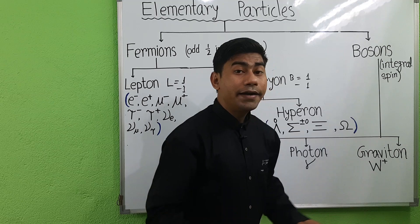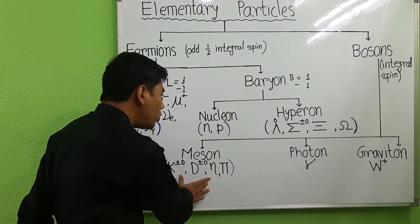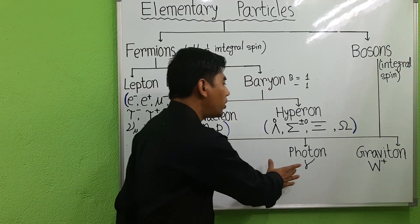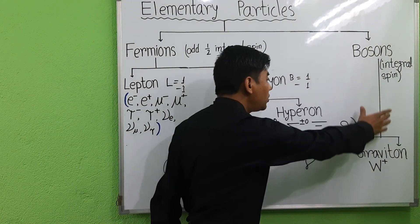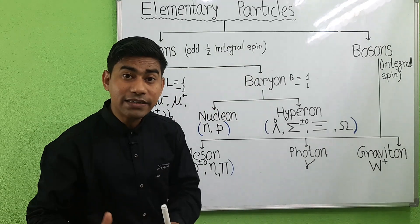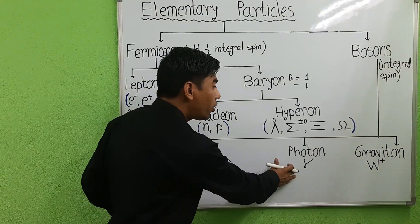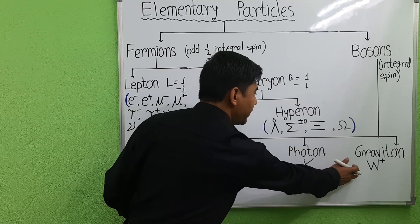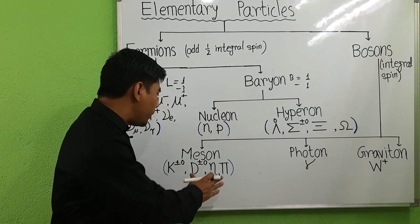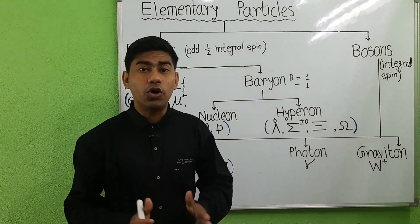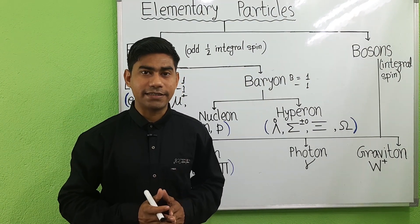Bosons are divided into three classes: meson, photon, and graviton. Mesons are bosons which obey Bose-Einstein statistics.